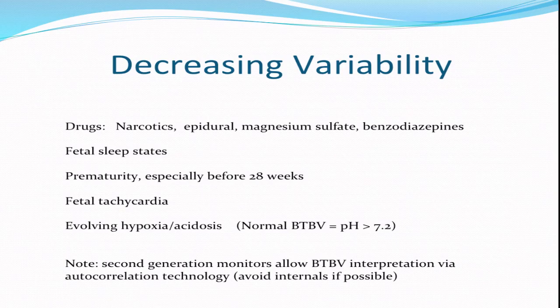Causes of decreasing variability are associated with drug administration, particularly narcotic administration, but also epidural narcotics, magnesium sulfate infusions, and benzodiazepines. Even certain deep fetal sleep states can alter beat-to-beat variability. Variability tends to occur in the maturing fetus, so it's not particularly pronounced before 28 weeks. Also, as fetal tachycardia develops, there is usually an associated decrease in variability. Our greatest concern about decreasing variability is its association with hypoxia and fetal acidosis.